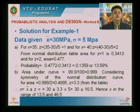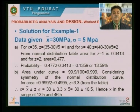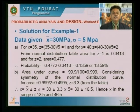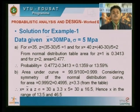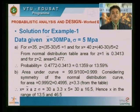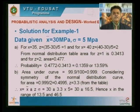For z = 1, the area from the table is 0.3413; for z = 2, the area is 0.477. The difference gives 0.477 − 0.3413 = 0.1359. Therefore, the probability of a cube strength falling between 35 and 40 MPa is 13.59 percent.